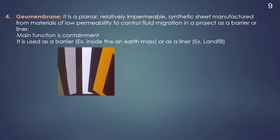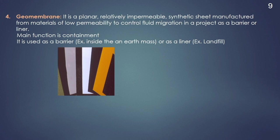Next is the geomembrane. Geomembrane is mostly an impermeable sheet-like structure, generally made of synthetic polymer materials. Because of its low permeability, it is used to control fluid migration in a project, acting as a barrier or liner. Due to its impervious nature, it is mostly used as a liner material as well as a barrier material. The main function of this geomembrane is containment, and it can be used wherever an impermeable layer is needed, such as a barrier layer inside an earth dam or as a liner in a landfill.